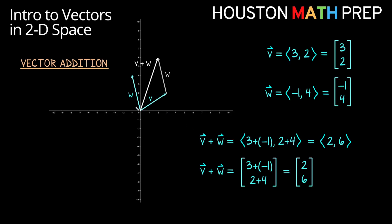Over here you can see that traveling vector V and then vector W gave us an end location of (2,6), just like our addition.